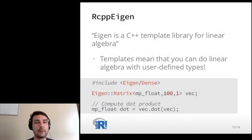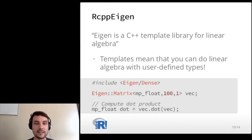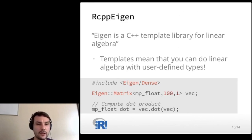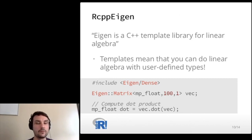This becomes very powerful when combined with the RCPP Eigen package. As the documentation says, Eigen is a C++ template library for linear algebra, meaning you can use the same functions with user-defined types. Templates mean you can do linear algebra with those user-defined types. In the code snippet, I give an example of creating a 100 by 1 matrix — really a column vector — using the arbitrary precision type defined previously. I can then compute the dot product of this column vector with itself, and the result is an arbitrary precision number. The two packages together interface and allow us to do arbitrary precision linear algebra.